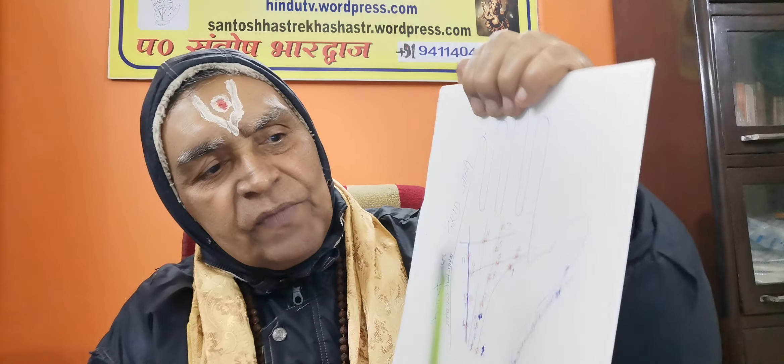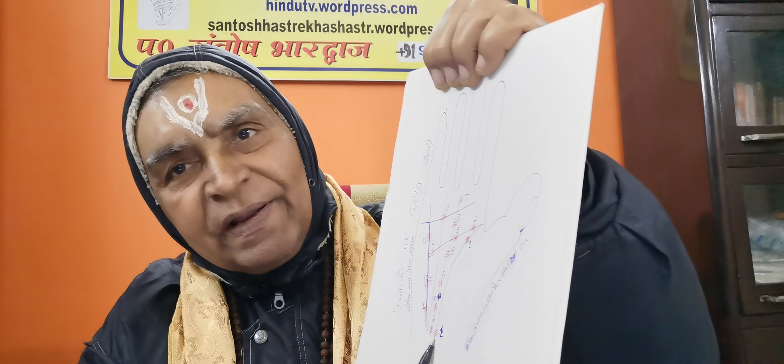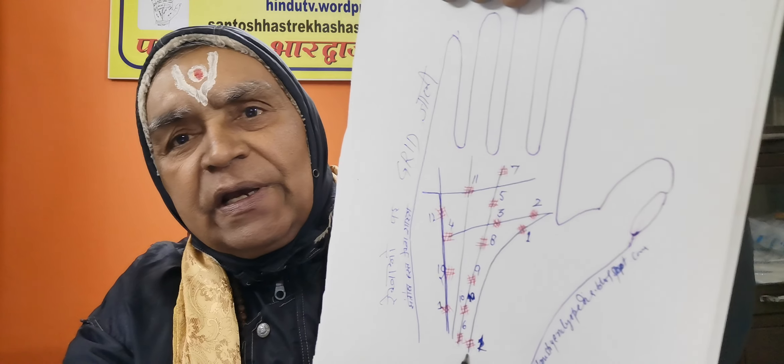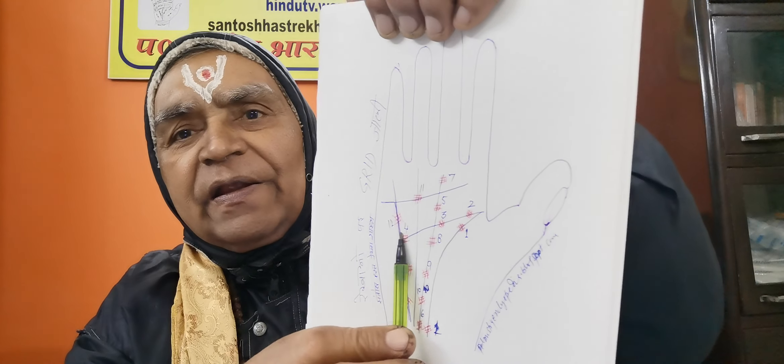Today I am explaining the grid found over the lines. The first line is the lifeline. This is the lifeline, and at number one you see the grid. This grid generally affects the health around 18 to 20 years. But if the grid is found at any of the segments till the end, this will explain the health position, which you can confirm over the health line. And if it is found over both the hands, you must carry out a health checkup.